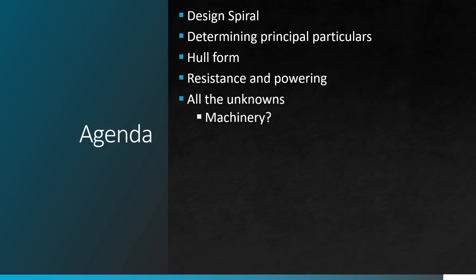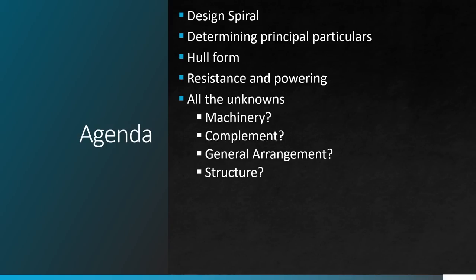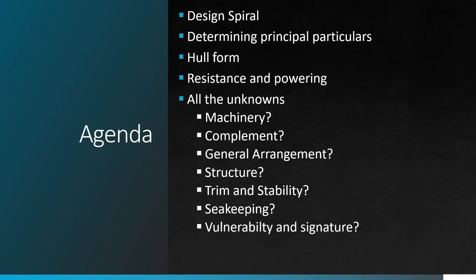Machinery? No real information on that. Crew complement? Don't really know that either. General arrangement? We don't have much information about that. Structure? Nope. Trim and stability? Not really. Seakeeping? Yep, also not. Vulnerability signature? Also not. And cost. All these unknowns will have an impact on whether or not the vessel is feasible.